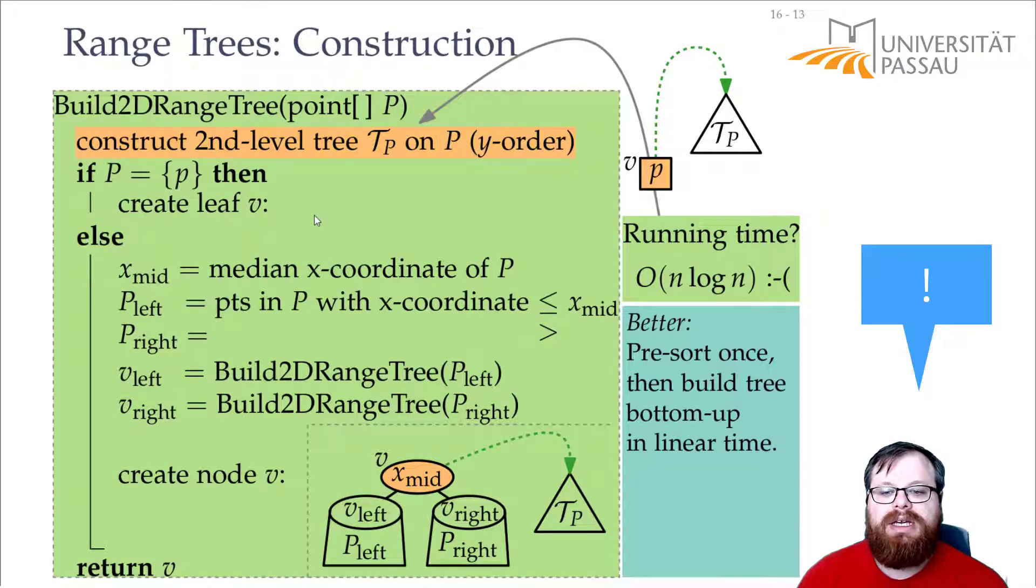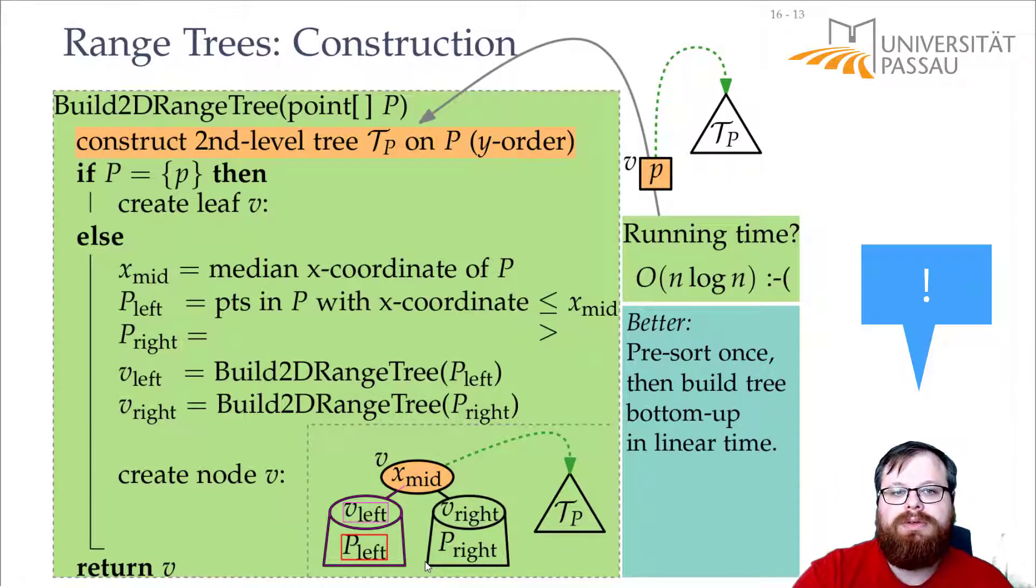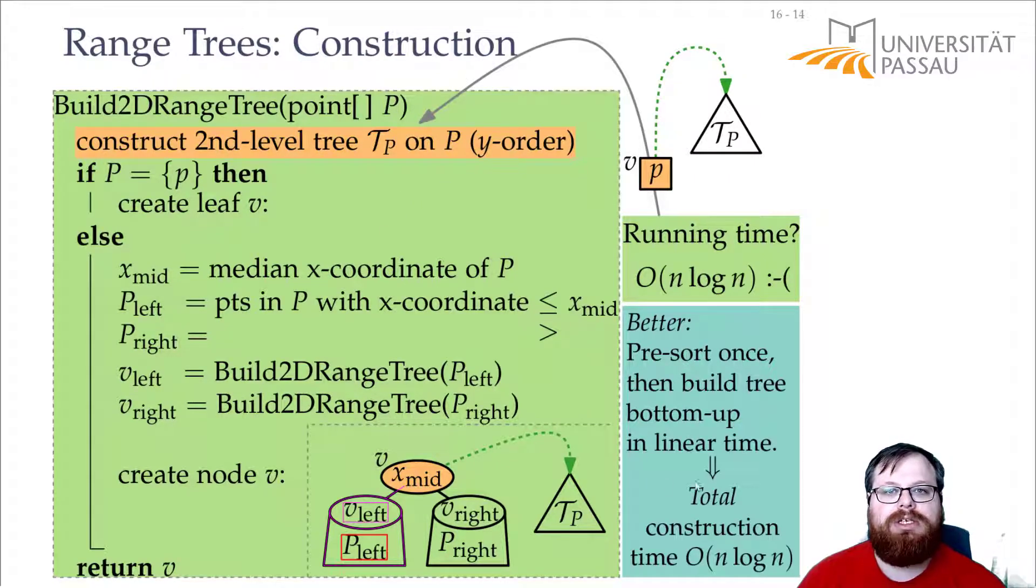So we pre-sort everything in the beginning and then we build the tree bottom up in linear time. In every step we can just take all these points. We have these two sorted sequences and we do a merge step of the merge sort algorithm. We pick the smallest of the two, add it, take the next one, add it and so on. And since we add them in ordered fashion, we can build the whole tree in order of n time. So now we don't need order of n log n in every step but only order of n. And then we have the exact same recurrence formula as we had for the KD trees and the total construction time is again order of n log n.